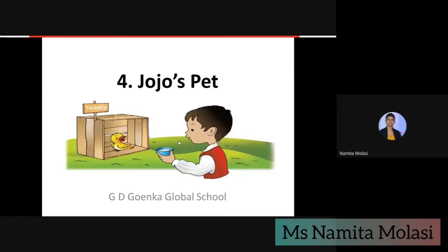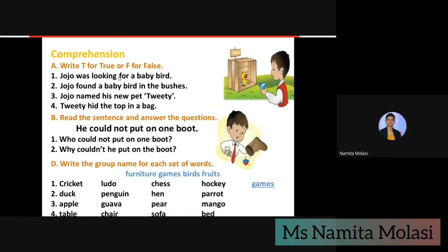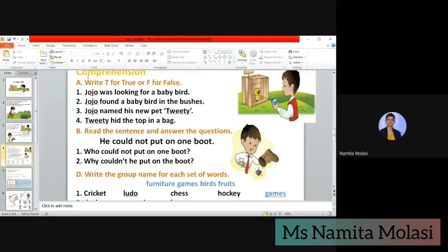Hello everyone, I am Mithamata and this is Lesson 4: Jojo's Pet. This lesson we are going to do the exercises. The first is Exercise A: write T for true and F for false. Number one: Jojo was looking for a baby bird.